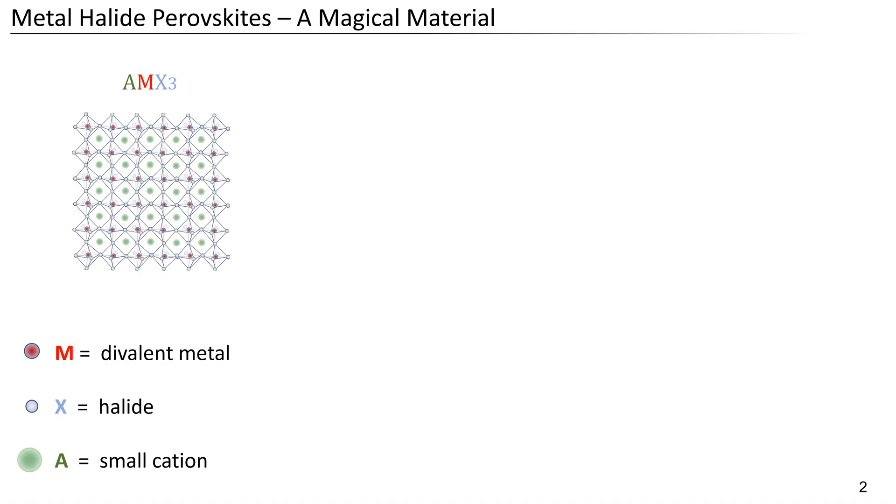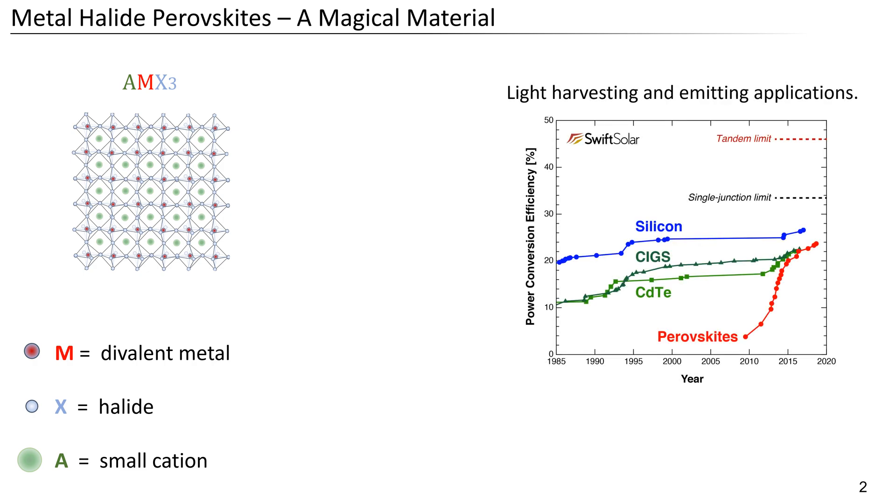Metal halide perovskites are made up of three main components: a metal, a halide, as well as a small cation. In recent years perovskites have shown tremendous potential for lightweight, solution-processable, low-cost and highly efficient electronics, with the most prominent example being perovskite solar cells, which reach very high efficiencies in a very short amount of time.